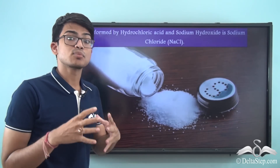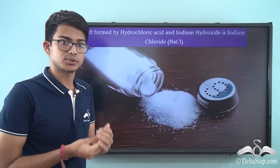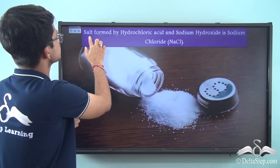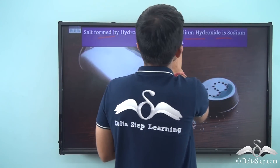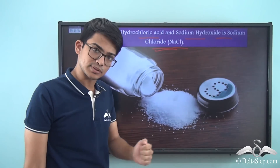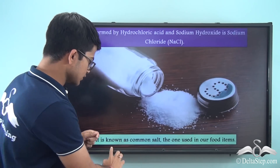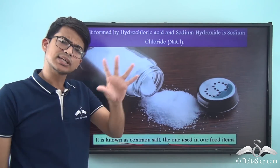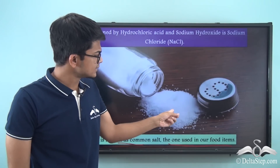Now let's focus on the most common type of salt which we all use - common salt or sodium chloride. Salt formed by hydrochloric acid and sodium hydroxide is sodium chloride, NaCl. This is the common salt you can see in this picture, known as common salt, the one used in our food items.